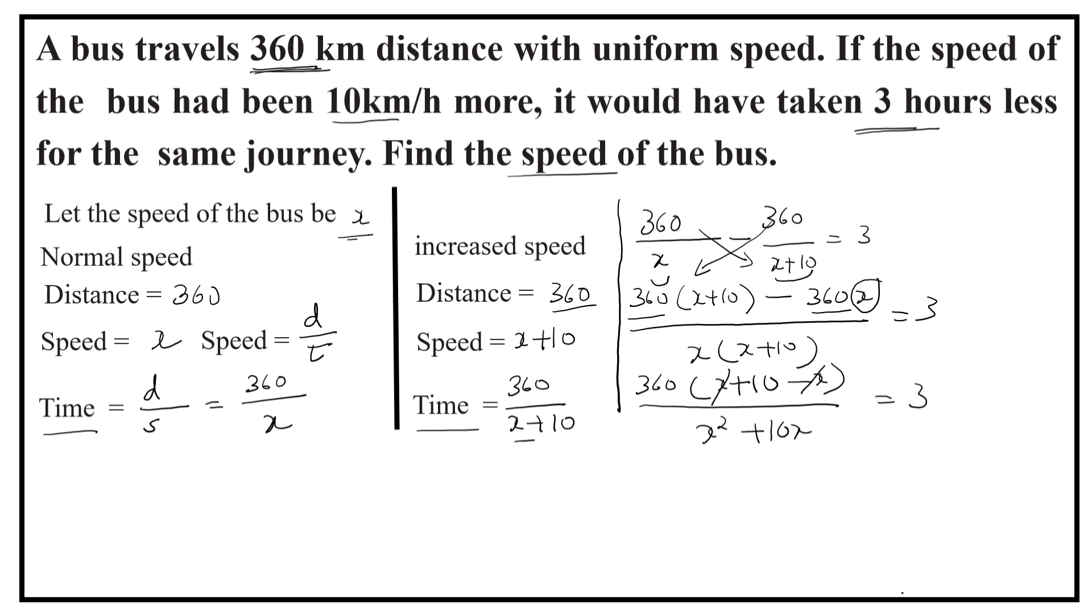Here, x and x get cancelled. 360 into 10 is equal to 3,600. Cross multiply to get 3x square plus 30x. Now, write in the standard form: 3x square plus 30x minus 3,600 is equal to 0.